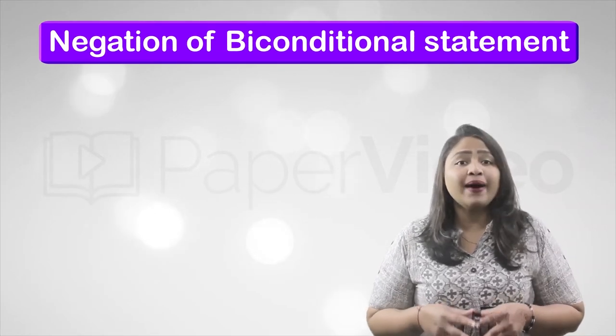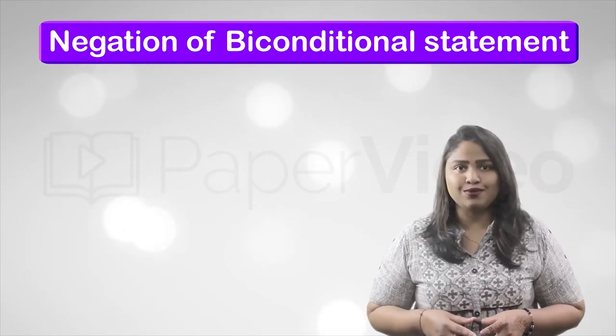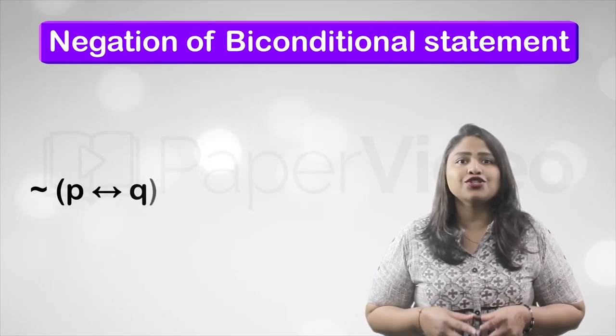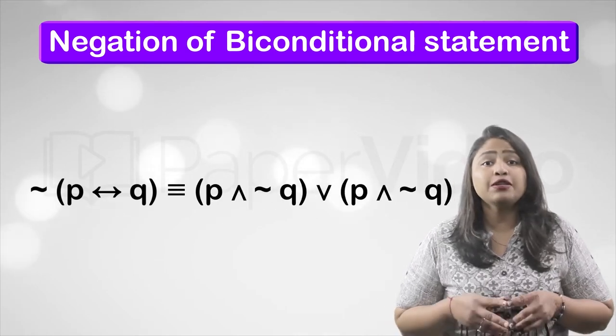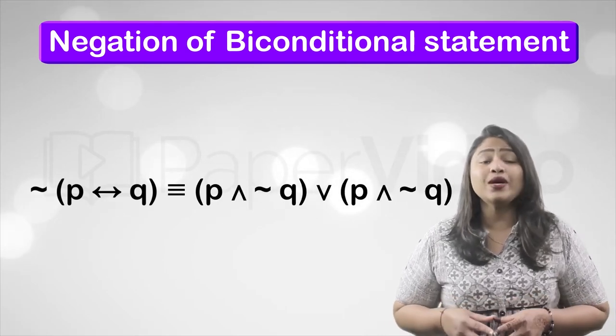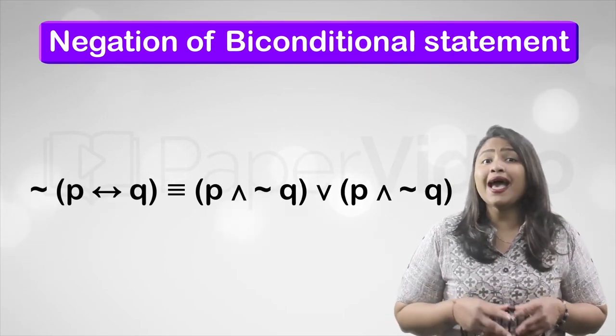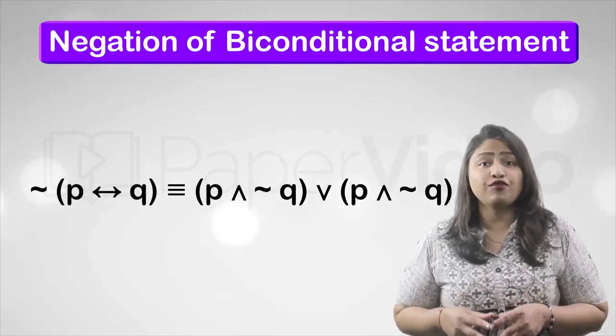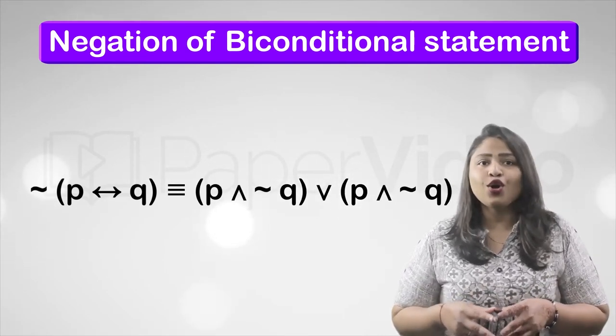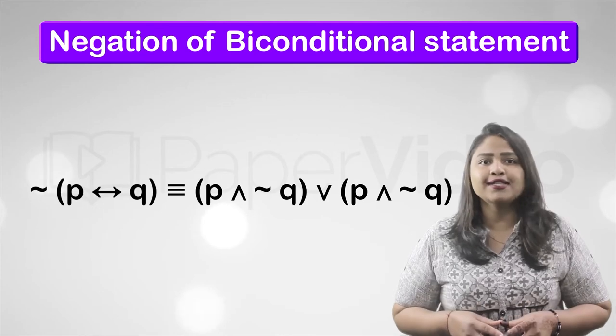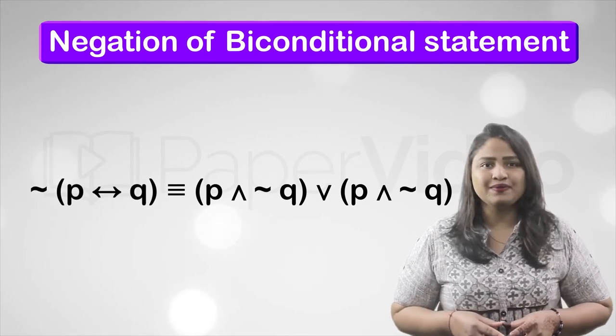Next is negation of biconditional statement. The negation of biconditional statement in P and Q is: P and negation of Q, or Q and negation of P.